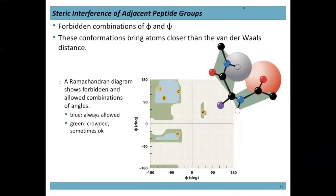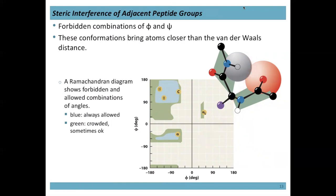Ramachandran spent time studying phi and psi angles and came up with a diagram showing forbidden — more precisely, unfavorable — and favorable combinations. They essentially rotated all possible combinations and looked for steric clashes. Unfavorable angle combinations end up in the forbidden region, while the favorable angles are shown in green and blue. Within the blue region they're always allowed — these are the really favorable angles, with phi in the negative 80s to negative 170s and psi between 90 and 180.